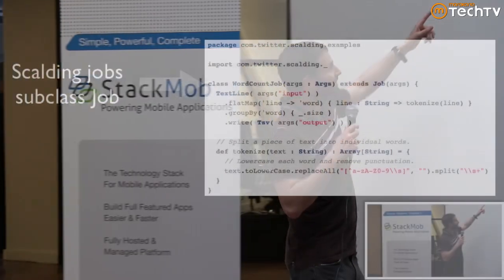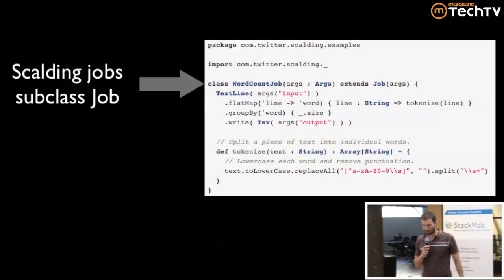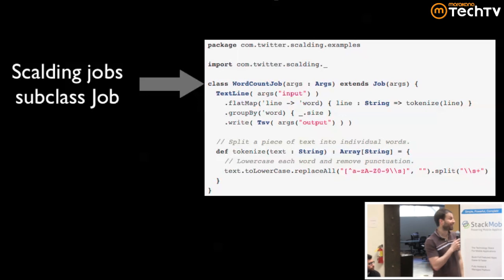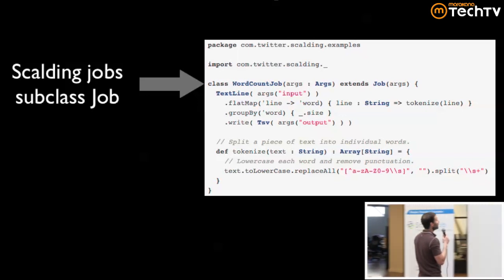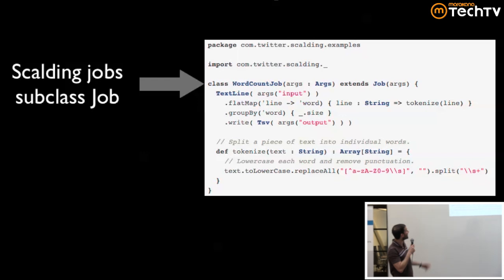With just flat map you're basically good to go. If you just implement that and get it right, you're fine. For some ridiculous reason, someone wrote the first word count example for MapReduce programming, and everyone does this.